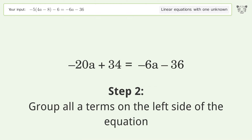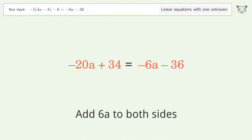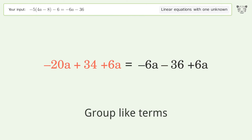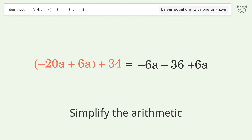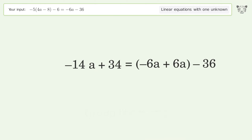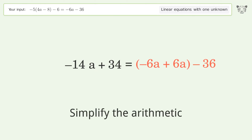Group all a terms on the left side of the equation by adding 6a to both sides. Group like terms and simplify the arithmetic. Group like terms again and simplify the arithmetic.